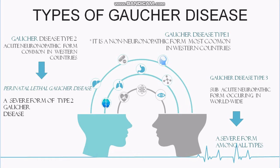Another form of Gaucher disease is caused by mutation in the gene encoding Saposin C, which is an activator of beta-glucocerebrosidase. Yet another form is known as the cardiovascular type because it primarily affects the heart, causing heart valves to harden and calcify. People with the cardiovascular form may also have eye abnormalities, bone disease, and mild enlargement of the spleen (splenomegaly).